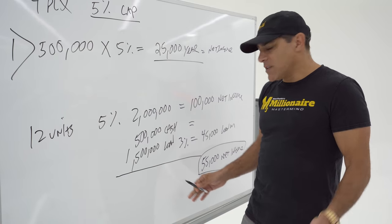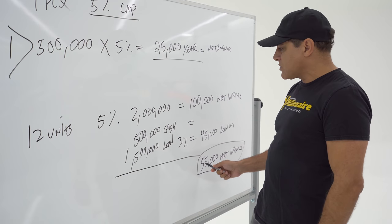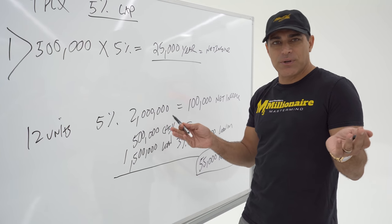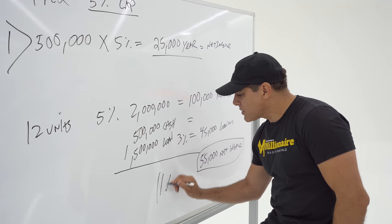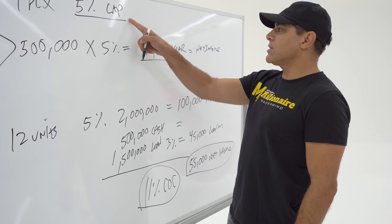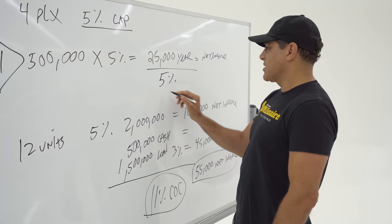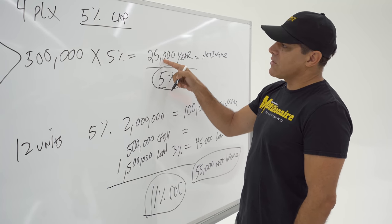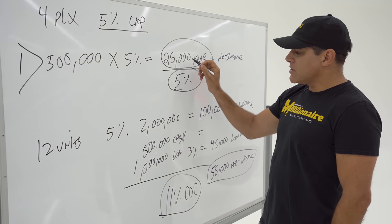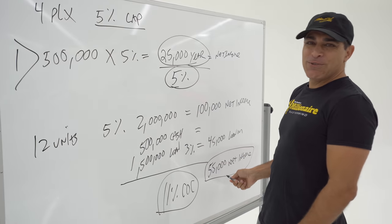Now you see how leveraging a deal, you can substantially increase your rate of return on your cash. So $55,000 divided by your cash of $500,000 invested is over 10%, about 11% cash on cash, leveraging a deal versus 5%, which is not leveraging it. So you're making $25,000 a year on your investment or $55,000 a year. Which one do you like better? Of course, $55,000 a year.